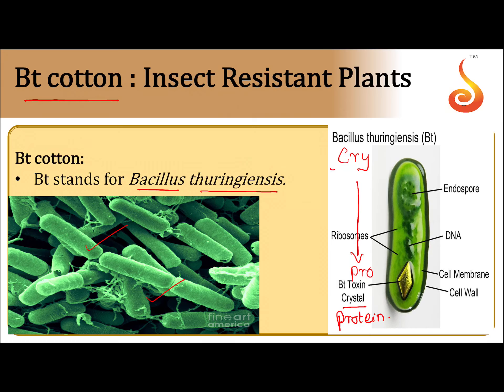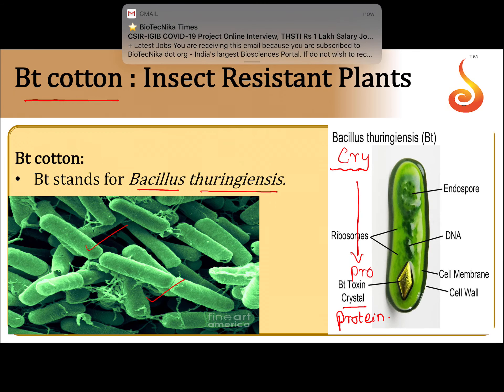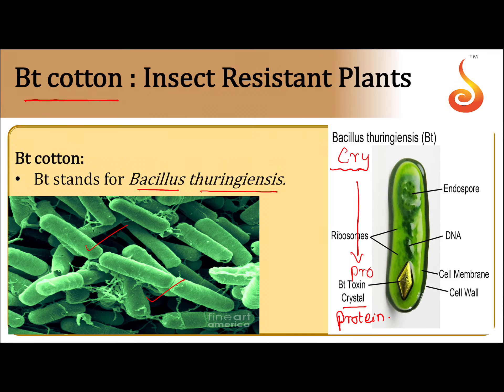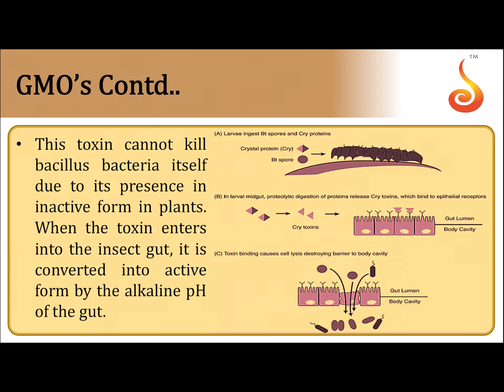Scientists isolated a specific cry gene from Bacillus thuringiensis bacteria and introduced it into cotton, brinjal, tomato, and tobacco. Such plants are considered Bt plants. Bt plants are insect-resistant plants.